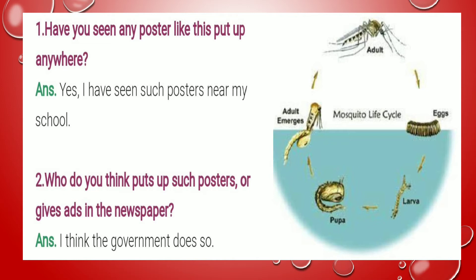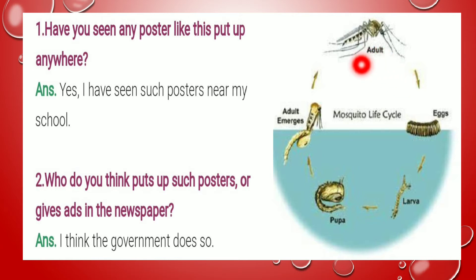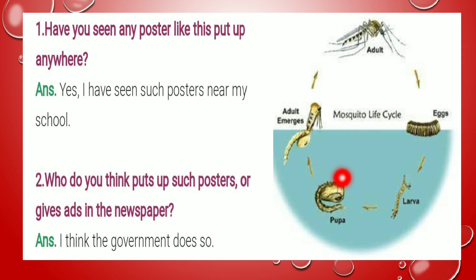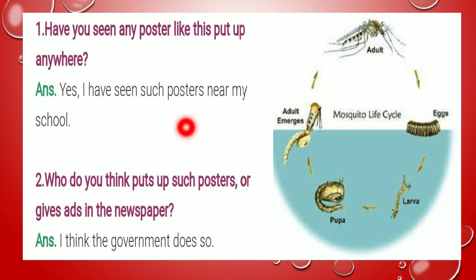अब mosquito की life cycle देख लेते हैं. Life cycle मतलब कैसे शुरू होता है और फिर बड़ा mosquito कैसे बन जाता है. यहाँ पर यह adult mosquito है, बड़ा मच्छर, इसने अंडे दिए पानी में. अंडों में से निकले larva — छोटी-छोटी, पतले-पतले ग्रे कलर के. Larva से बना pupa, और pupa के बाद इसमें से wings निकलते हैं और यह फिर से बड़ा मच्छर बन जाता है. तो अंडे कहाँ देते हैं — पानी में. तो आपने क्या करना है, पानी इकट्ठा नहीं होने देना है.